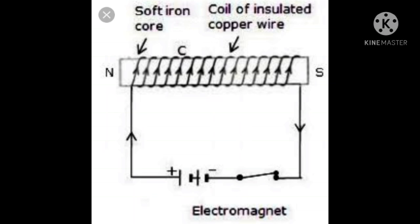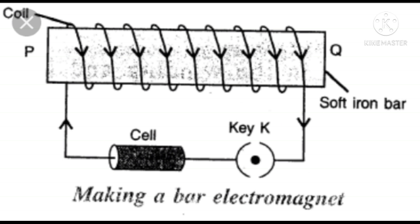A solenoid is a device which can be used as an electromagnet. It is made up of a long wire that has been bound many times, usually around a hollow metallic core, into a tightly packed coil and it has the shape of a long cylinder.